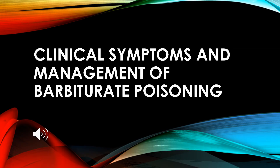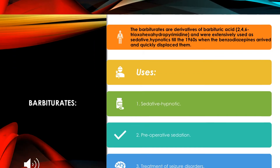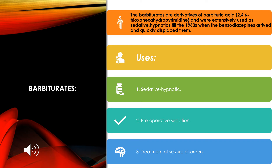In this video I am going to explain the clinical symptoms and management of barbiturate poisoning. Barbiturates are most commonly used for their sedative and hypnotic action. They are derivatives of barbituric acid, which is 2,4,6-trioxo hexahydropyrimidine. Once benzodiazepines were introduced, the use of barbiturates gradually decreased.